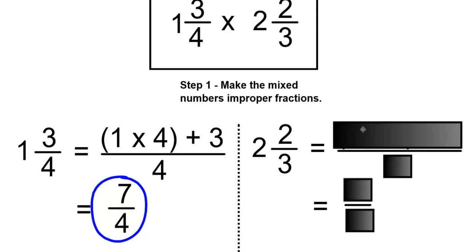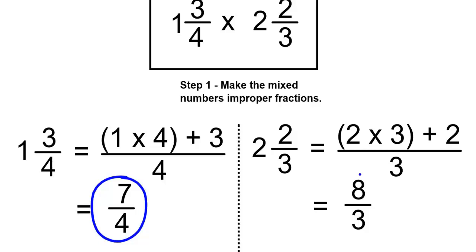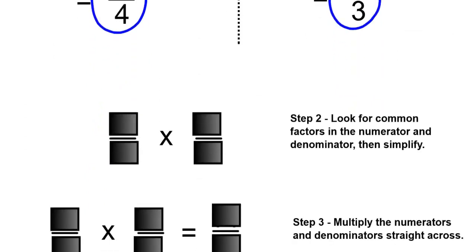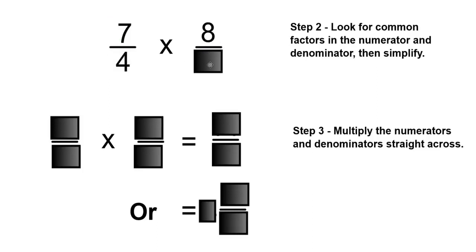Multiply the whole number, which is 2, by the denominator, which is 3, and then add the numerator, which is 2. Put this over 3. 2 times 3 is 6, and 6 plus 2 is 8, over 3. So 2 and 2 over 3, as an improper fraction, will be 8 over 3. Now write your improper fractions down: 7 over 4 times 8 over 3.